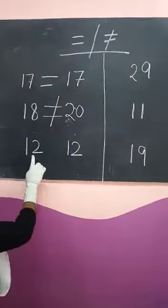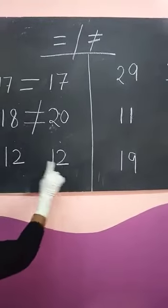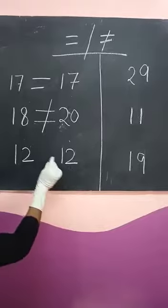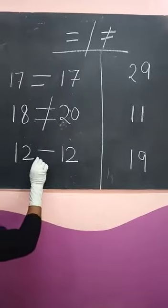Now, next, 1, 2, 12, 1, 2, 12. Dono equal hai, both are equal. So, we will put a sign equal to.